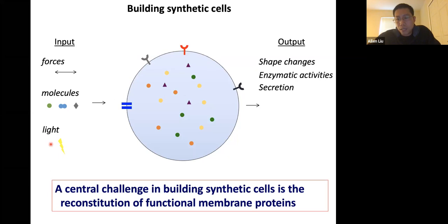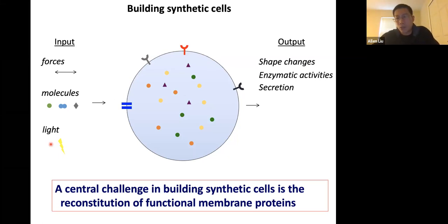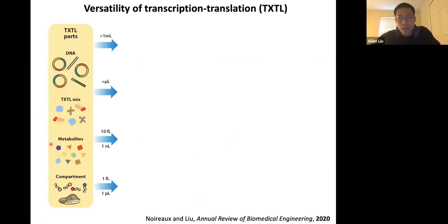A central challenge in building synthetic cells is how to get them to sense things. In order to sense extracellular stimuli, we need to reconstitute functional membrane proteins. A lot of the work we do involves creating a strategy to reconstitute membrane proteins, study their functions, and ultimately use them to build synthetic cells. Vincent, Roel, and I had an Annual Review article recently describing the latest bottom-up biology, where TXTL — transcription-translation — is an important piece.